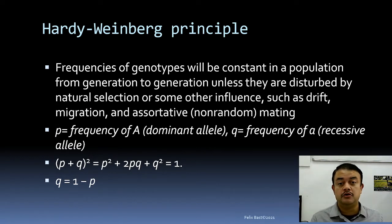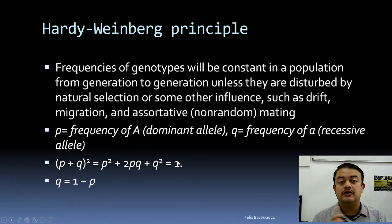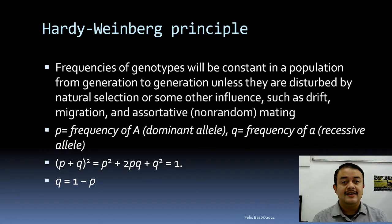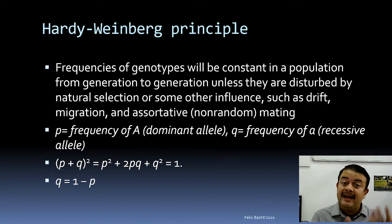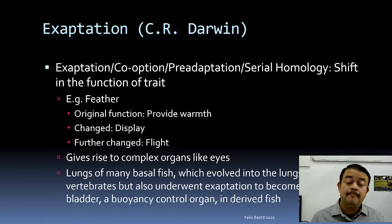Hardy-Weinberg means genotype frequencies remain constant unless disturbed by natural selection or other mechanisms of evolutionary change. Exaptation is a term coined by Charles Darwin. It is also known as co-option, pre-adaptation, or serial homology. It refers to a shift in the function of a trait over evolutionary time.